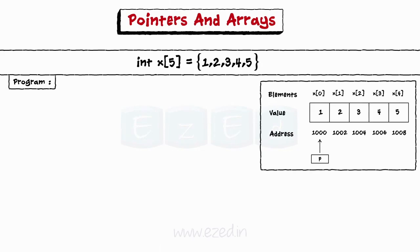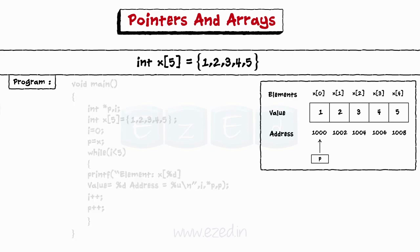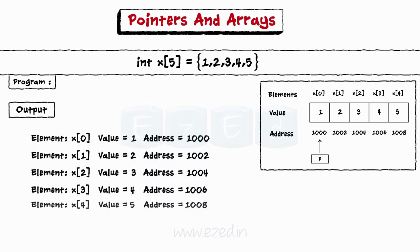This is a program what we have been trying to understand. Here, the individual array elements of x are accessed using asterisk p, while the address of the array element is given by p. To move the next element of array, we use p++. The output for this program is as follows.